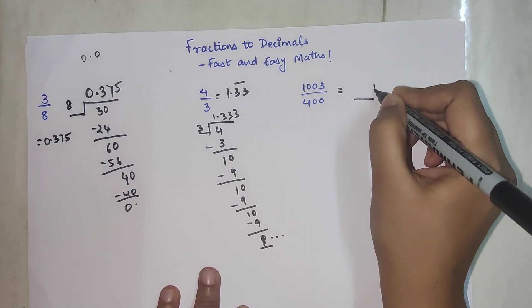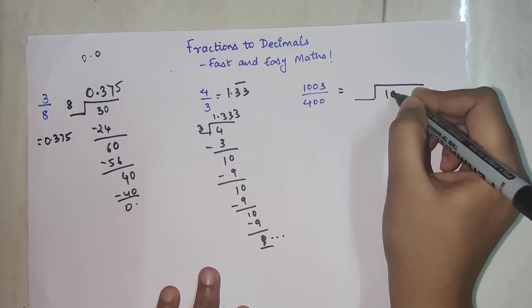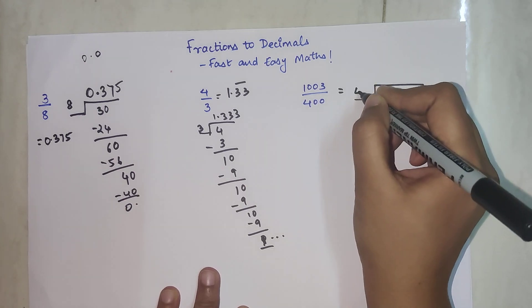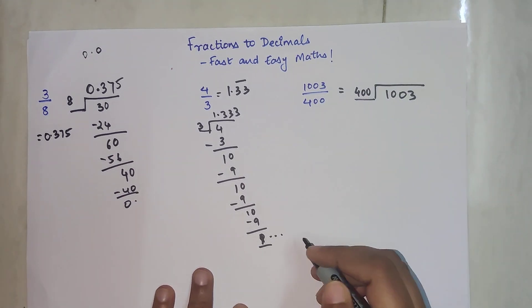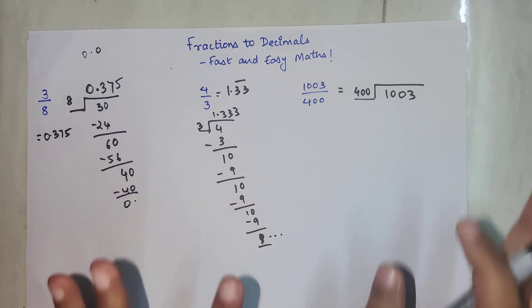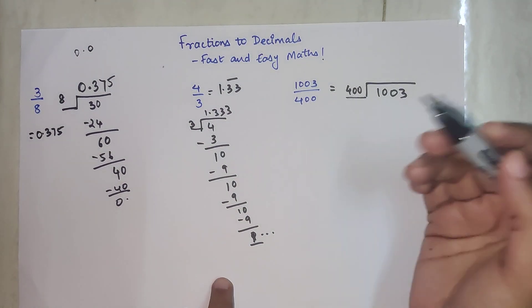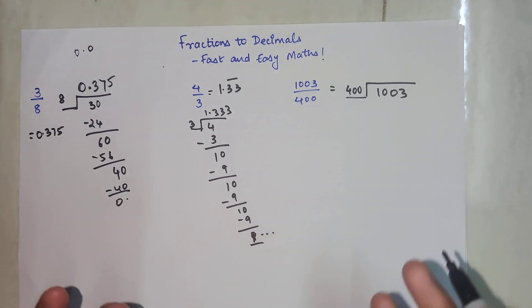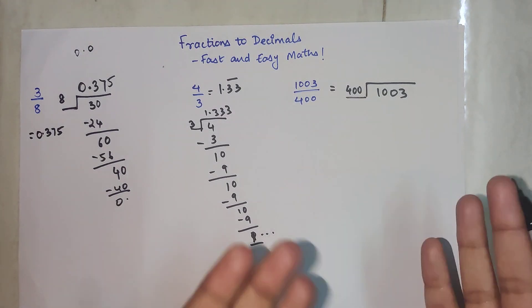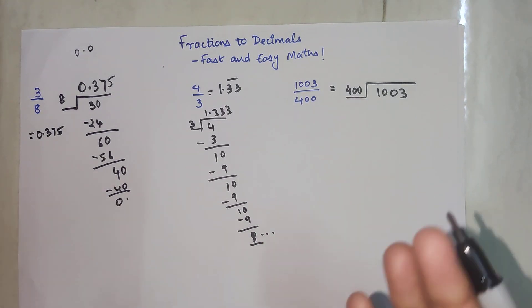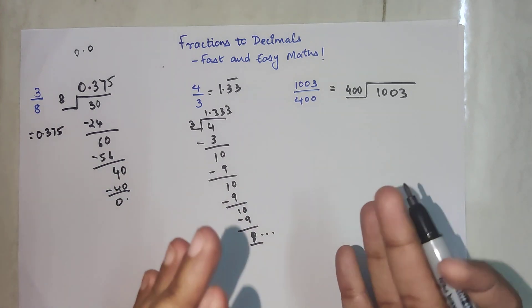Now here we have 1003 and 400. Now here the numerator is bigger. So we know 4 into 2 gets you 8, so 400 into 2 will get you 800. 4 into 3 gets you 12, so 400 into 3 will get you 1200.